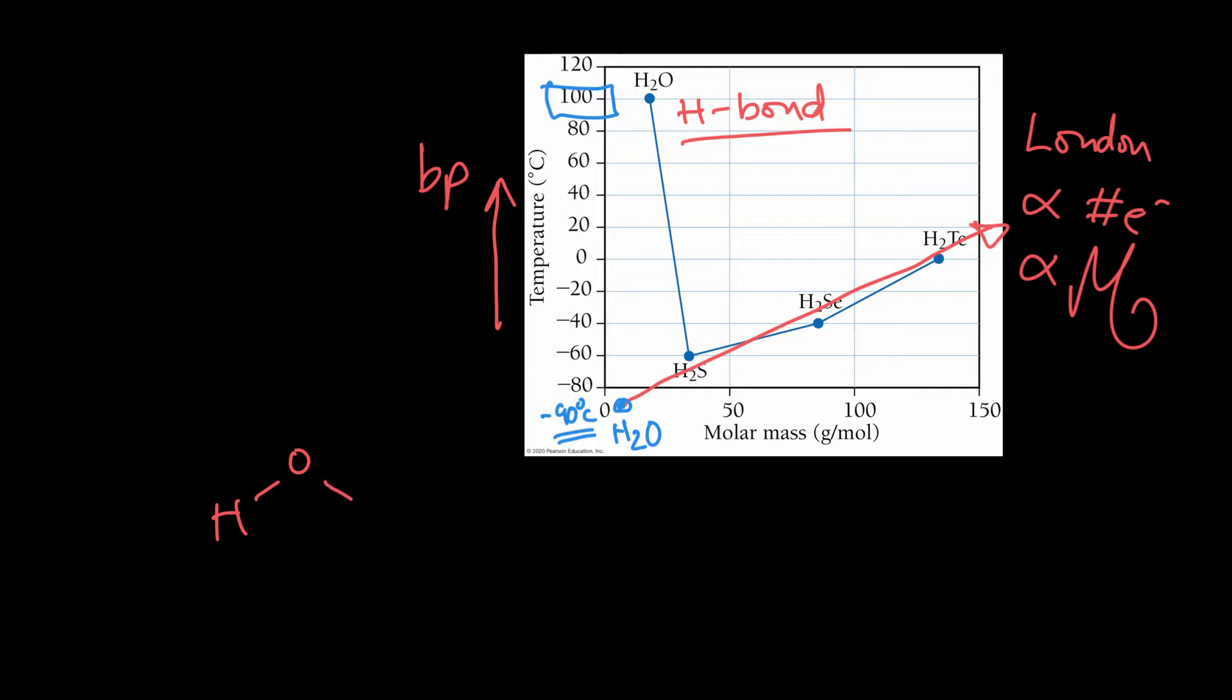And the reason for that is that water has that incredibly strong intermolecular force called the hydrogen bond. And those water molecules don't just have those wimpy little London dispersion forces between them - they have those incredibly strong hydrogen bonds that are forming that network that makes it really hard to boil.